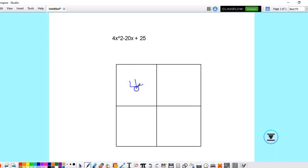So you would put—ooh sorry, I'm doing this without a slate—4x squared in the top left-hand corner, and then you'd put the 25 in the bottom right.